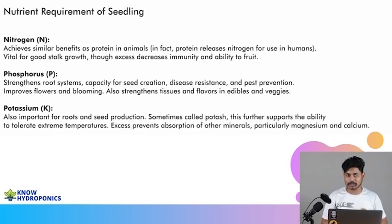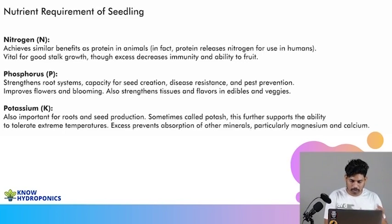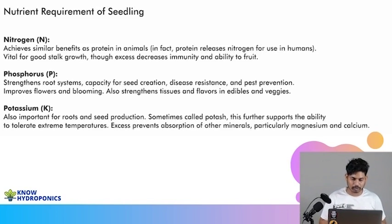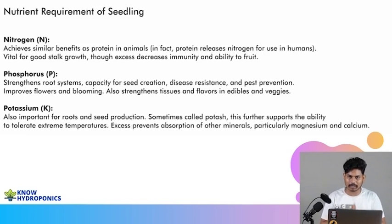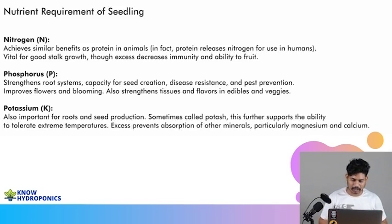In the seedling phase, we need nitrogen to boost the photosynthesis process, phosphorus to boost root management and root systems, and potassium to keep pushing plants toward ultimate growth and maturity. These are the three nutrient requirements for seedlings. That's why we use NPK 19-19-19 throughout the period of seedling development.